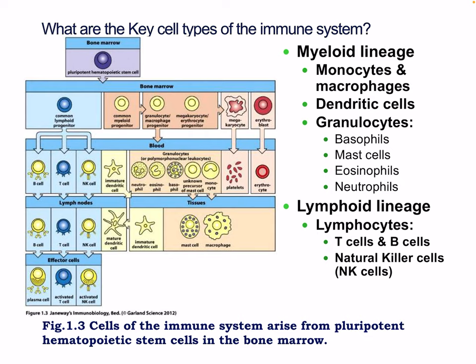Here is the development and lineage of immune cells. We have the myeloid lineage, which includes monocytes, macrophages, dendritic cells, and the granulocytes — basophils, mast cells, eosinophils, and neutrophils. We also have the lymphoid lineage, which includes T cells, B cells, and natural killer cells.